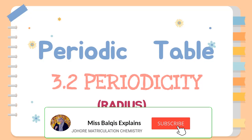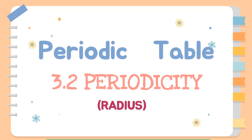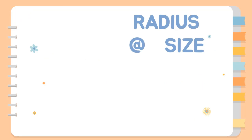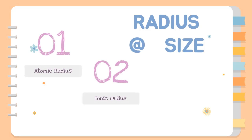Assalamualaikum warahmatullahi wabarakatuh and hello everyone. In this video, we're going to learn about a new subtopic in chapter 3 periodic table called periodicity. The first periodic trend we're going to look at is radius or the size of the atom. We could divide this radius trend into 3 cases: atomic radius, ionic radius, and isoelectronic species radius.